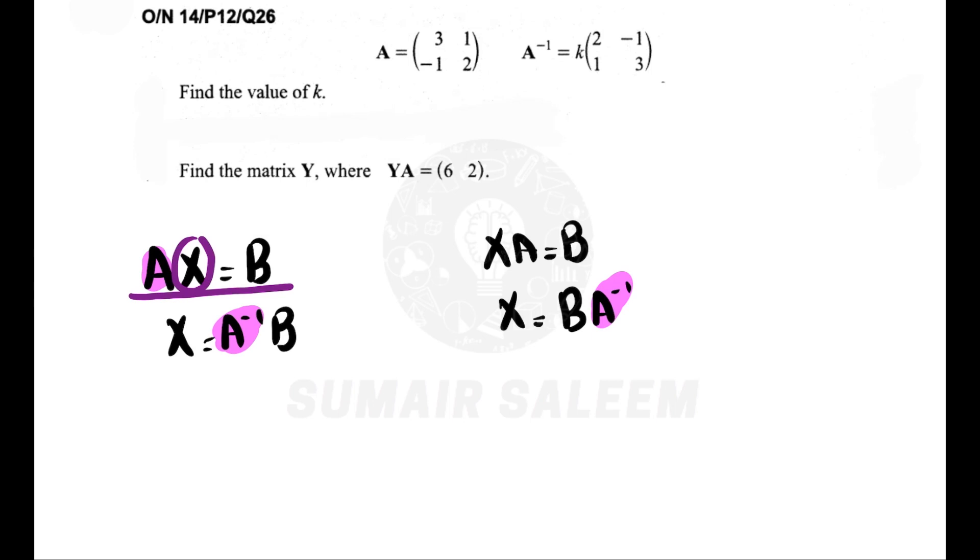Now let's find A inverse. How do you find inverse? 1 upon determinant. A into D: 6 into 3 is 0. Minus BC: 1 into minus 1 is minus 1. So 1 upon 7. Switch AD positions: 3 and 2 become 2 and 3. Change BC signs: plus 1 becomes minus 1, and minus 1 becomes plus 1. Now here K is missing, so K equals 1 upon 7.